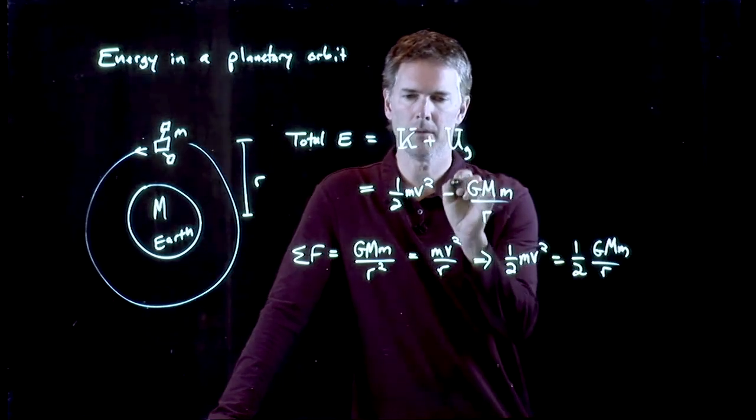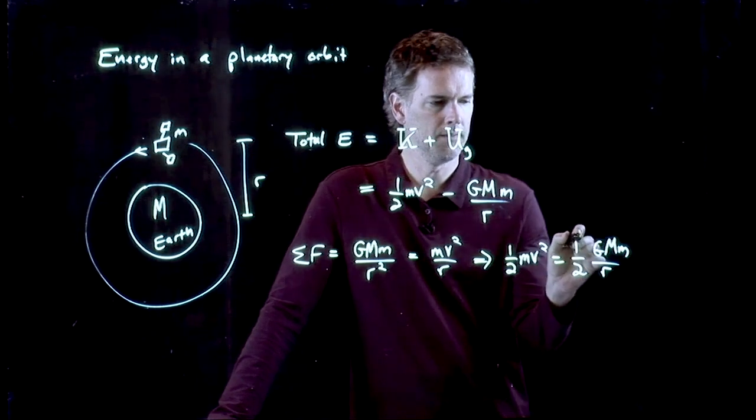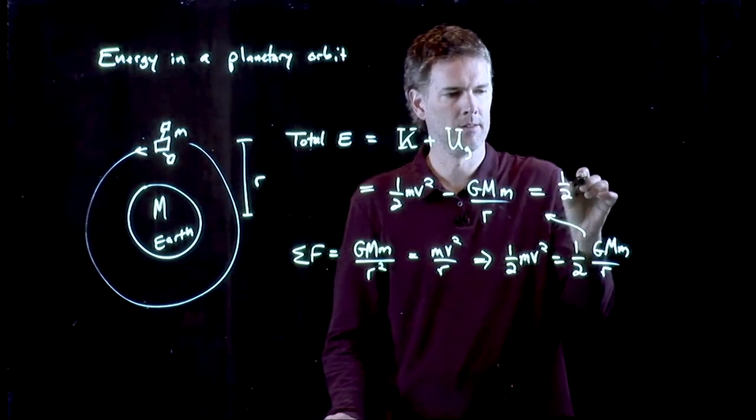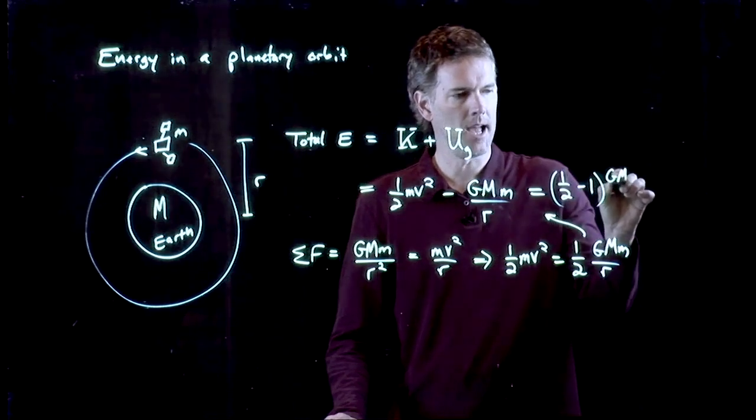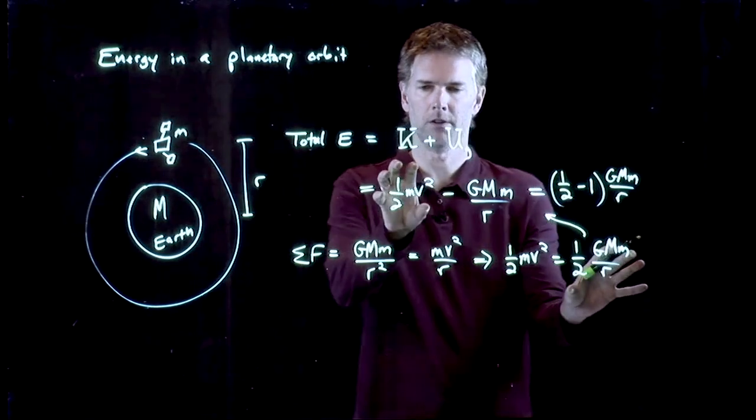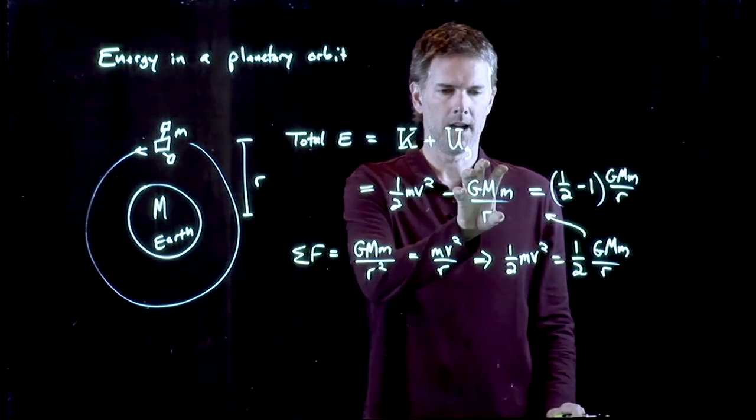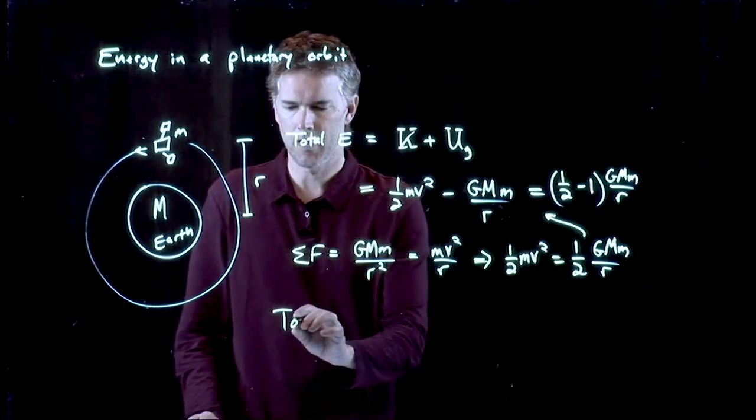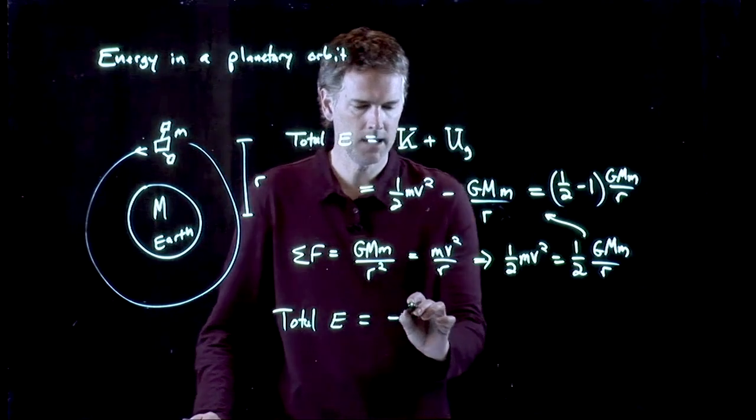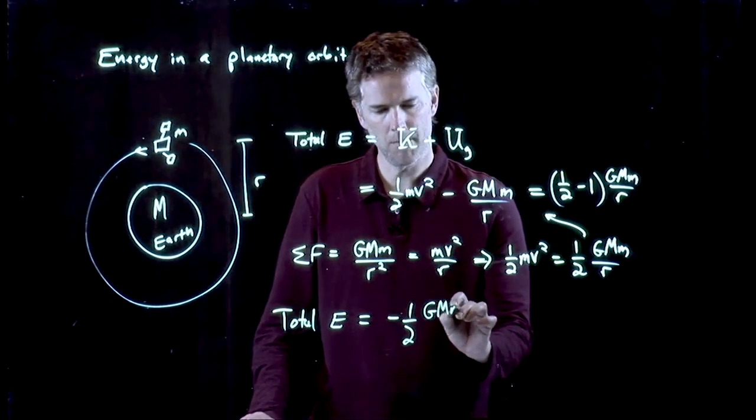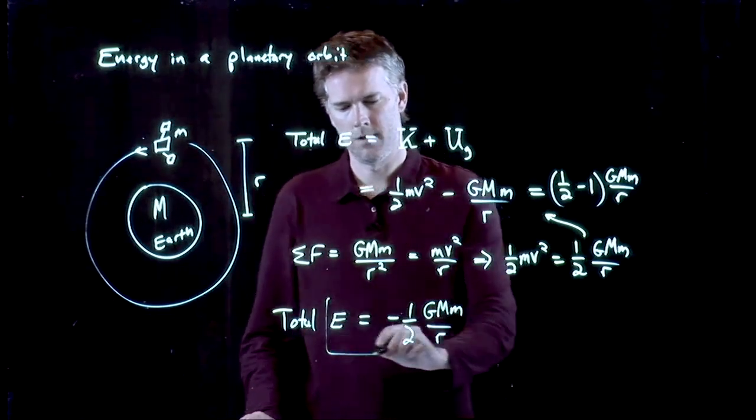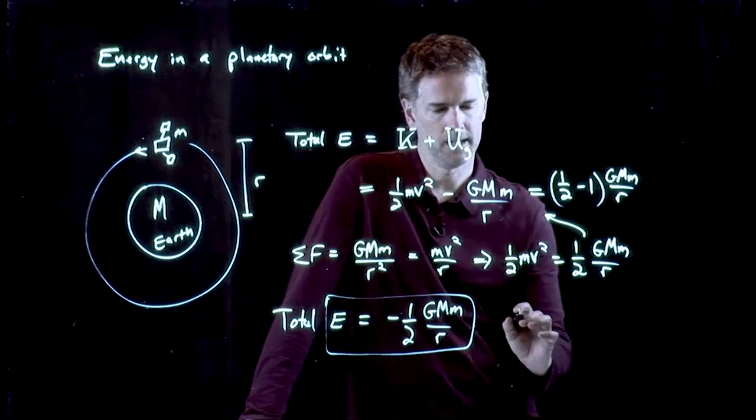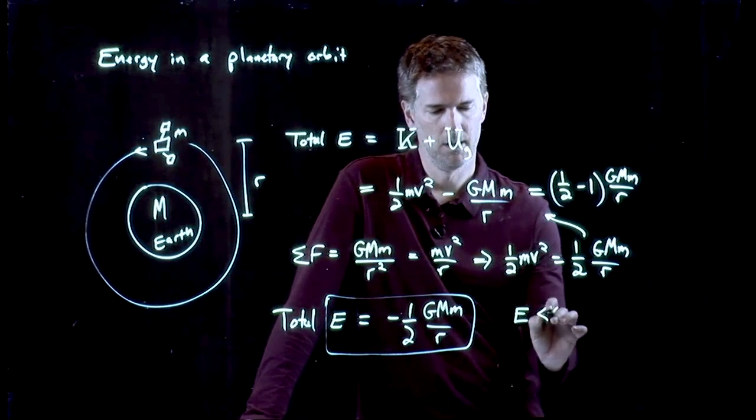And this thing we can plug back into this equation. And so the total energy becomes what? It is one half minus one GMM over R. I get a half from this term. That goes here. I get this guy, which becomes the one. And so a half minus one is, of course, negative a half. So what's the total energy? It is minus one half GMM divided by R. And those are all positive numbers. And so what's the energy in the planetary orbit? Or this satellite orbit? It's negative.